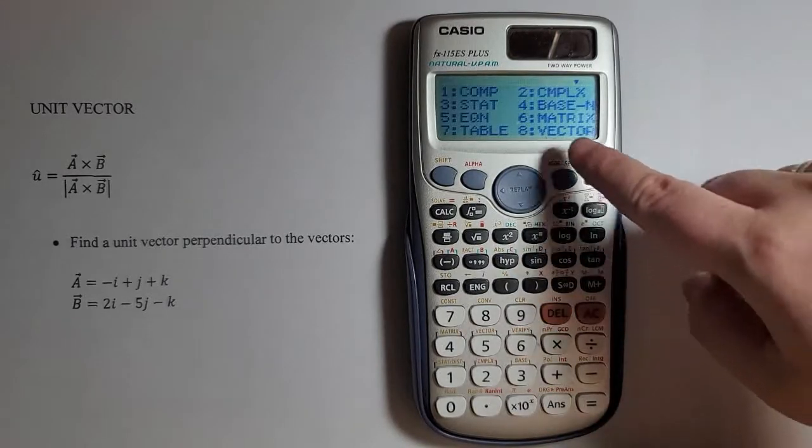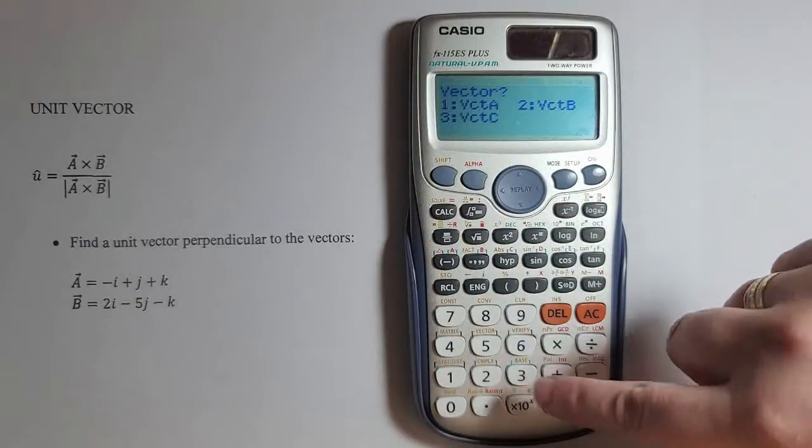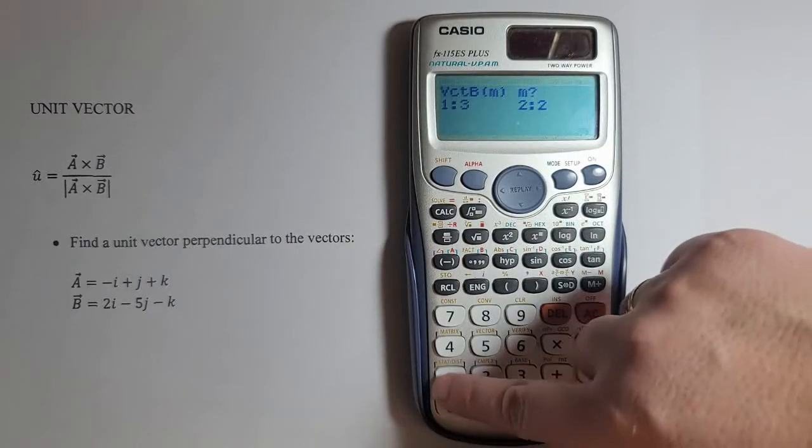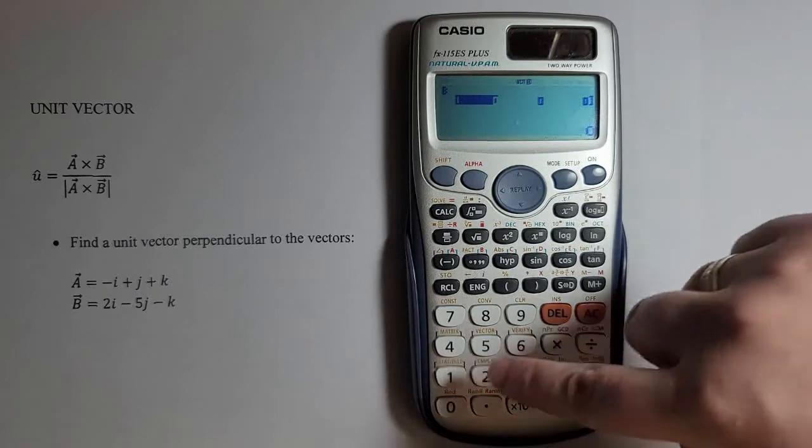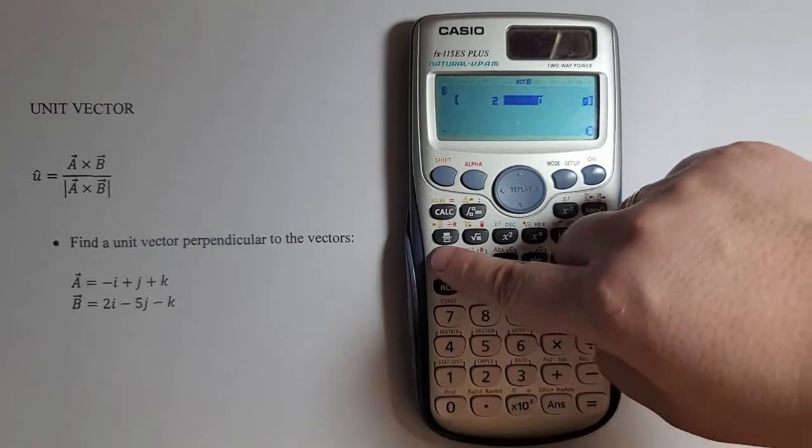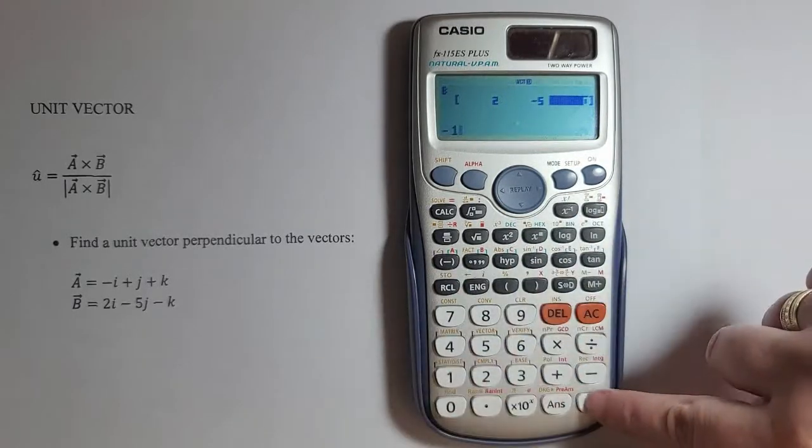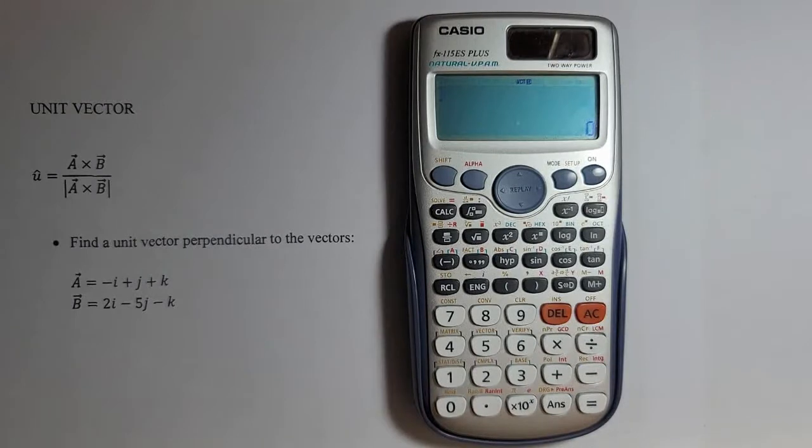I'll go to mode again. I'll press 8 for vector and now 2 for vector b, then 1 for the three directions. Now I'll enter 2, equal, -5, equal, -1, equal. Press AC to save.